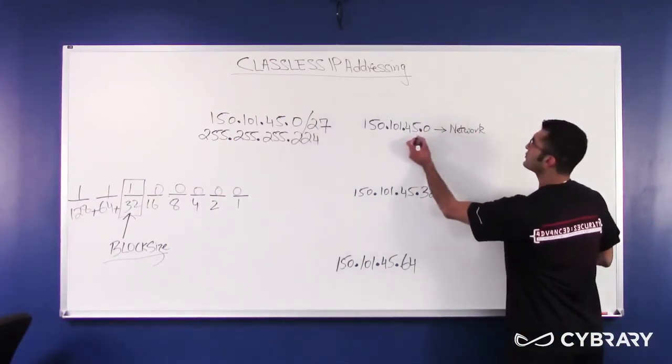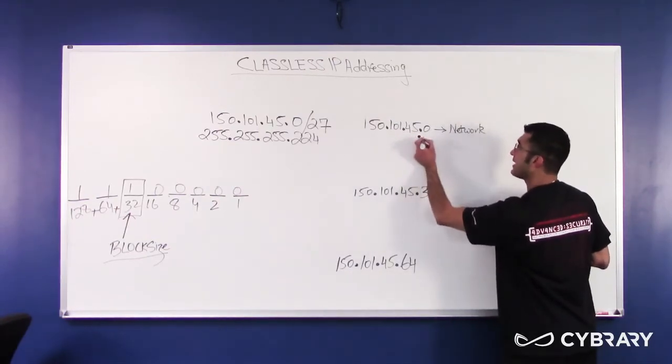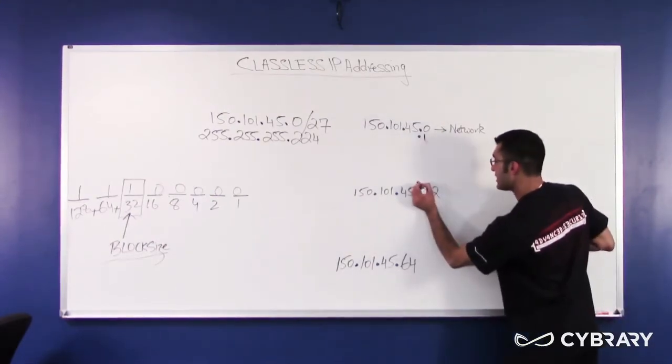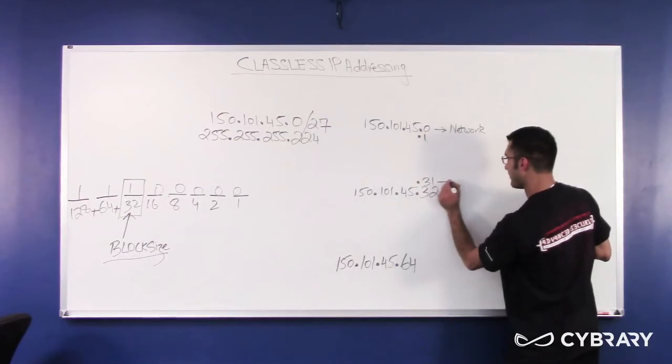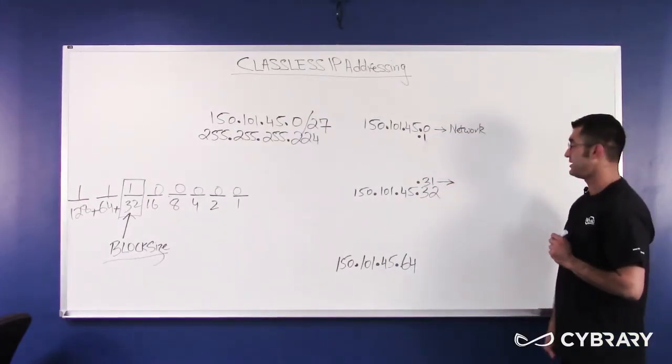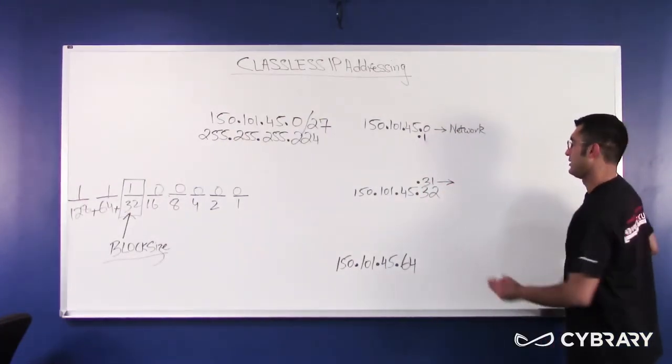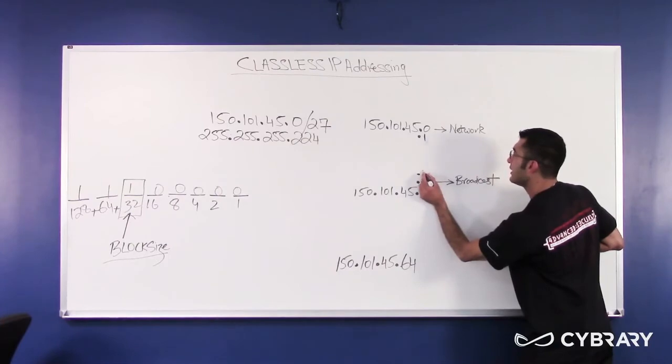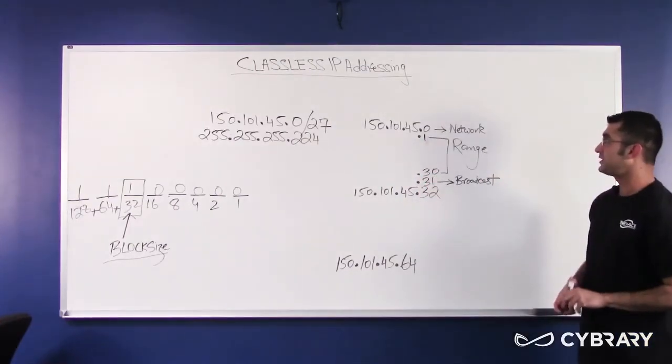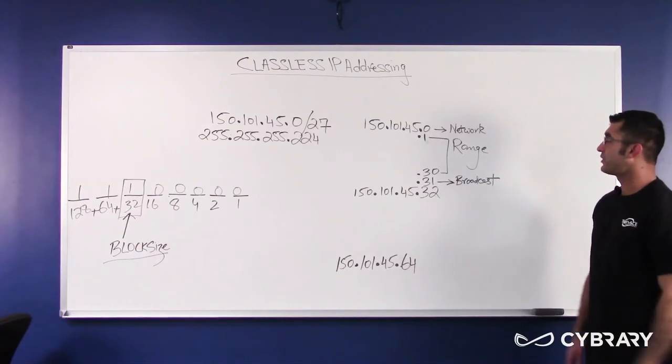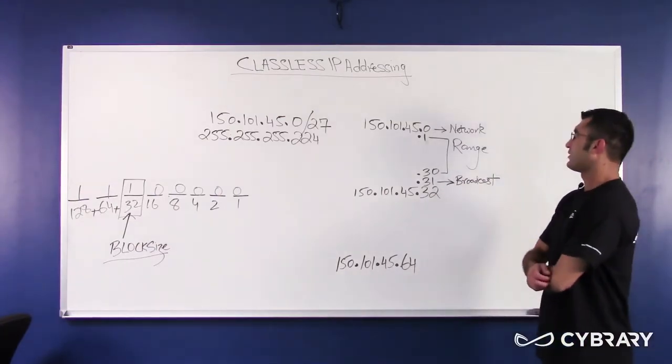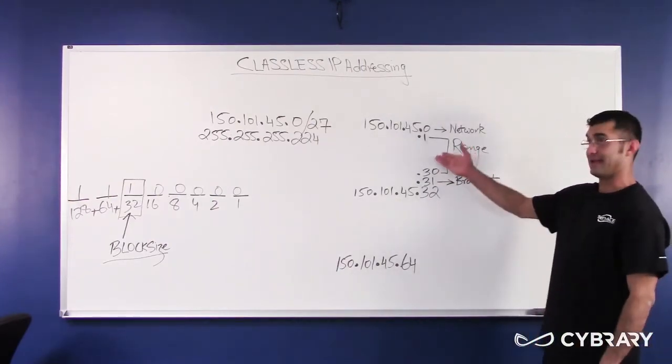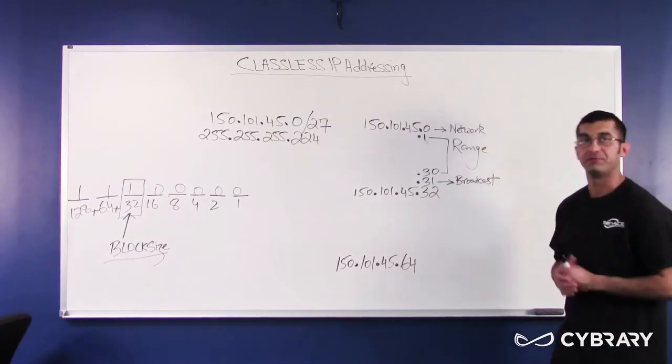So, my first valid host for this first street, or my first valid house address, is dot 1. My last possible address on this street would be dot 31. However, remember the rule, the last possible address on any network is your broadcast. So, my valid range would be between 1 and 30. So, 150, dot 101, dot 45, dot 1 would be my first valid address. 150, dot 101, dot 45, dot 30 would be my last valid address. Did I get 30 addresses? Yes. Did we need 30? Yes.